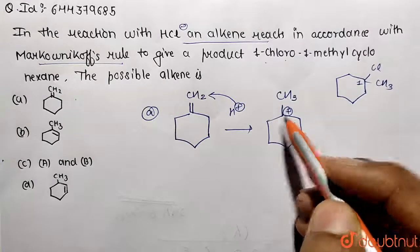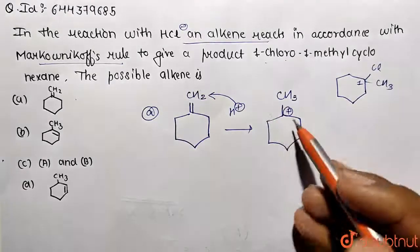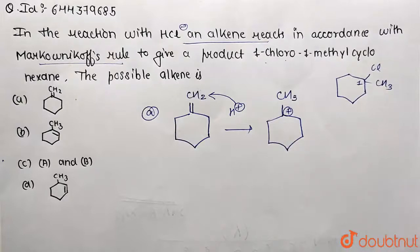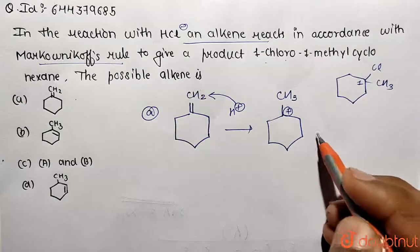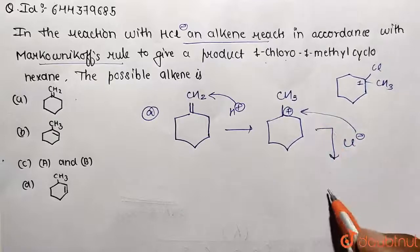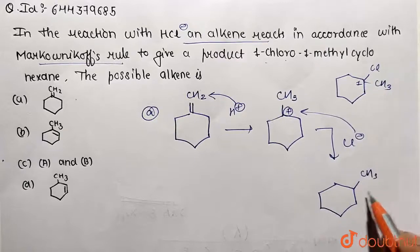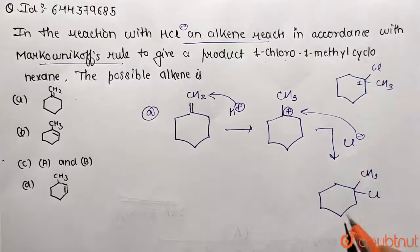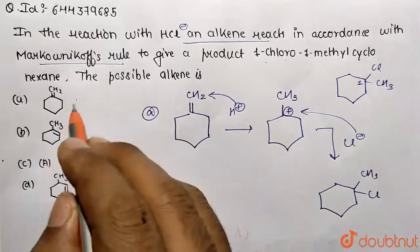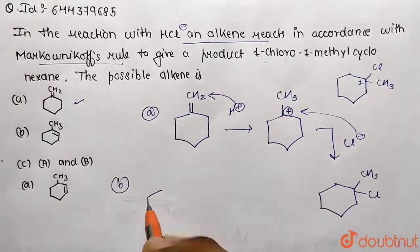If carbocation is formed over here, it's not going to be stable, so we're not taking that case. This is the stable carbocation formation. Now, we have attack of the nucleophile which is Cl-. This corresponding position will form the product containing methyl group as well as chloro. This is going to form what we require, so this is correct.